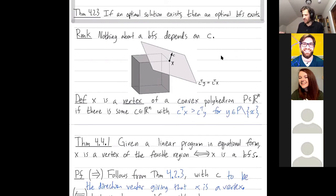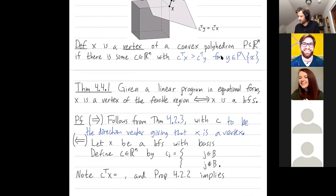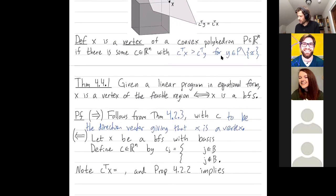I think it's a cool argument. It's a little, it requires you to shift your perspective a little bit. I'm also cheating in some sense that we didn't fully prove this theorem 4.2.3, but that's okay. All right, let's do the other direction. So now we're going from right to left. We need to show that if we have a basic feasible solution, then that X is also a vertex of the feasible region. So let X be a basic feasible solution with basis B.